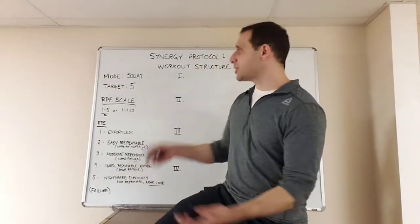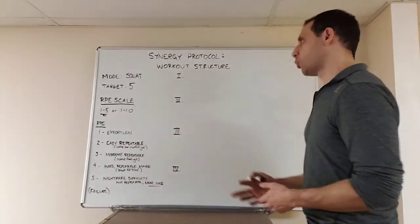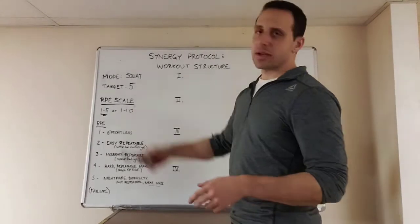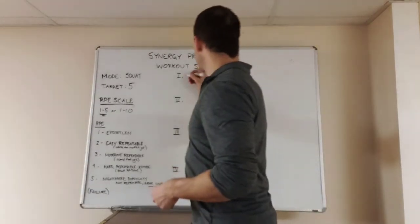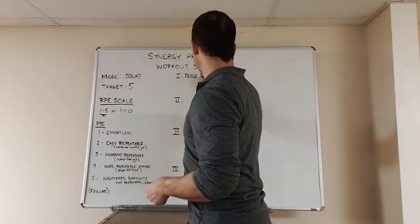So I really like the one to five scale. I'm going to be using that in this example. Once you have all this intact, you can build a workout, right? So you're going to have all this stuff prepared. You're going to know what your target is before you go into the workout. And in this instance, we're going to do squats.